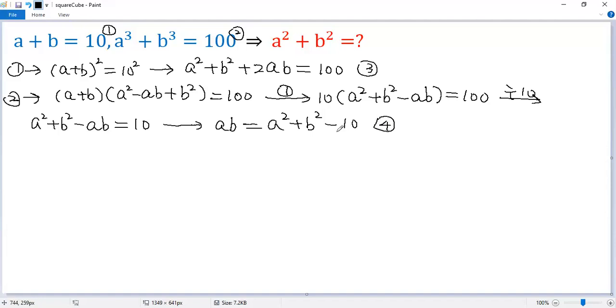Now substitute condition 4 into condition 3. So 4 to 3. So a squared plus b squared plus 2 times a times b, using the right side of 4. So we get a squared plus b squared minus 10. The right side is still 100.